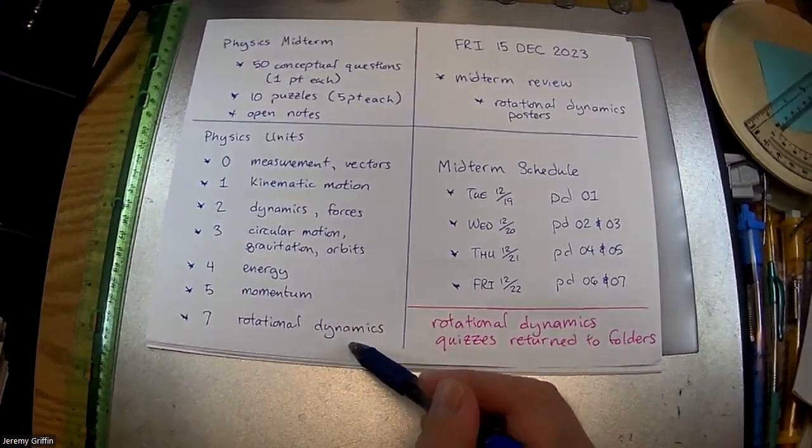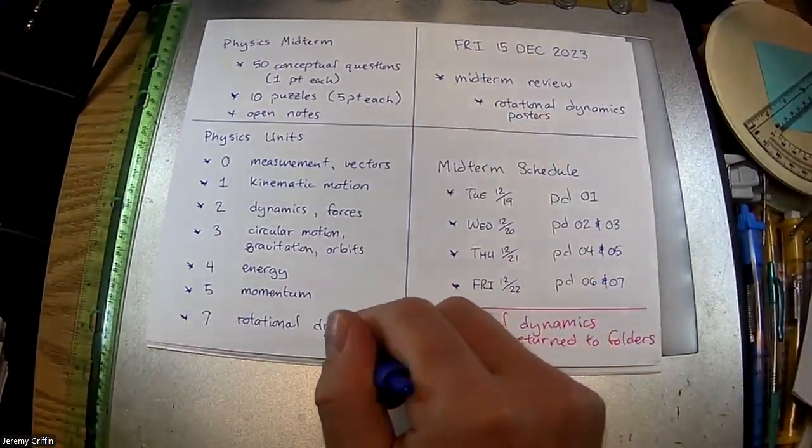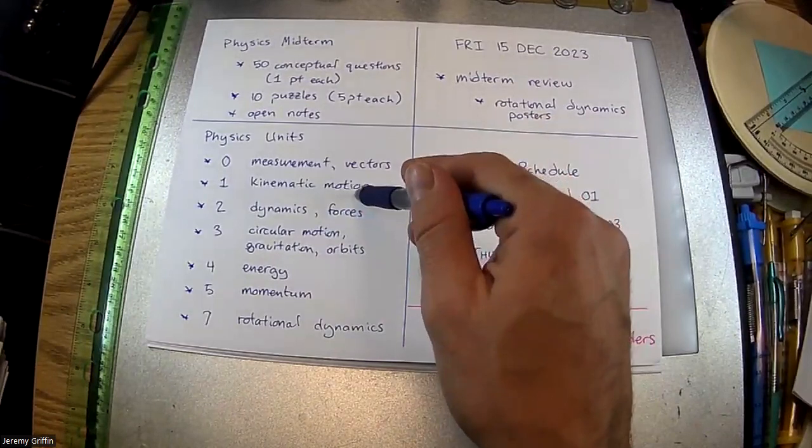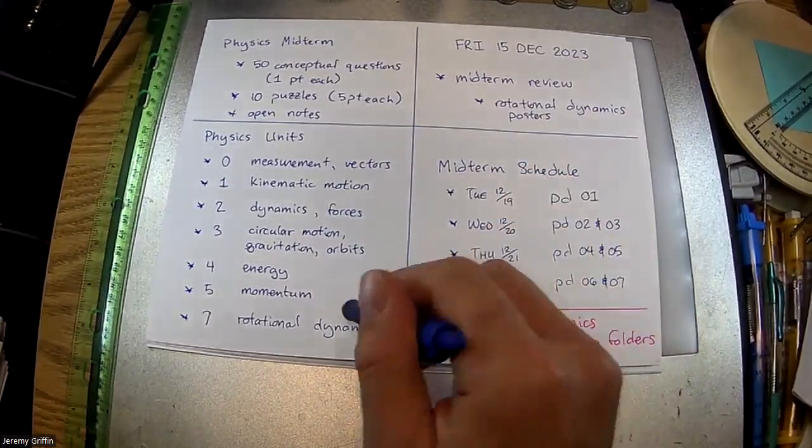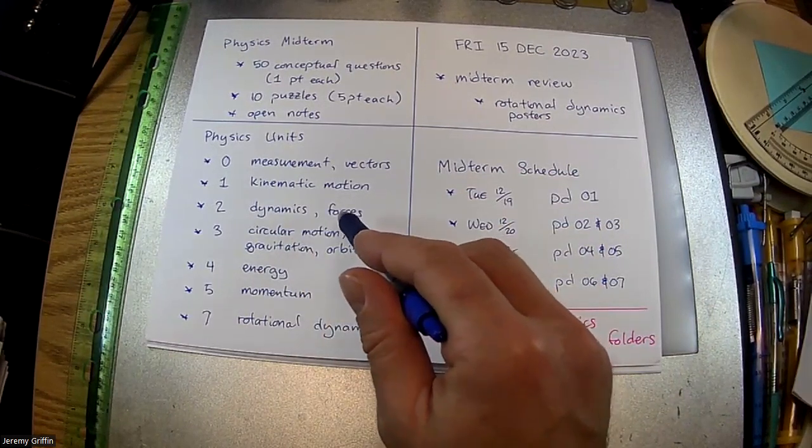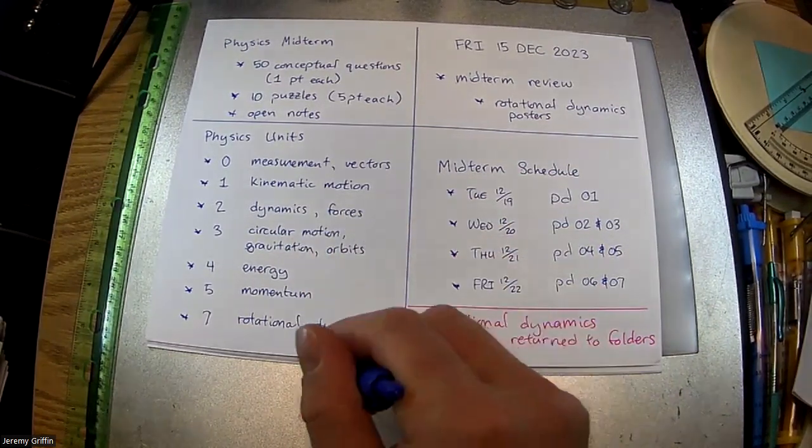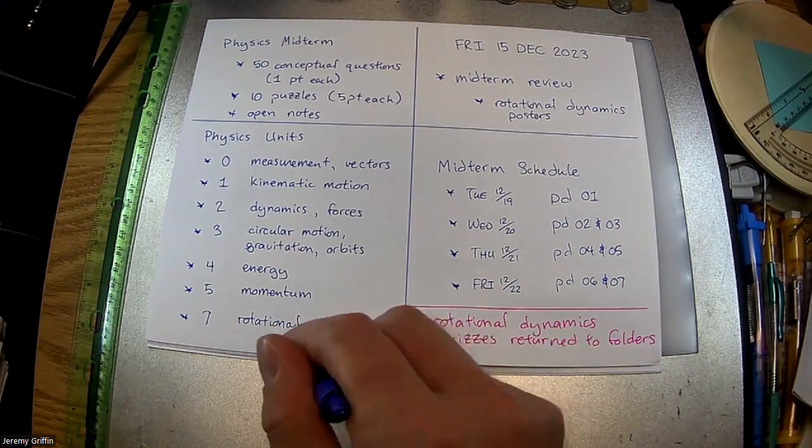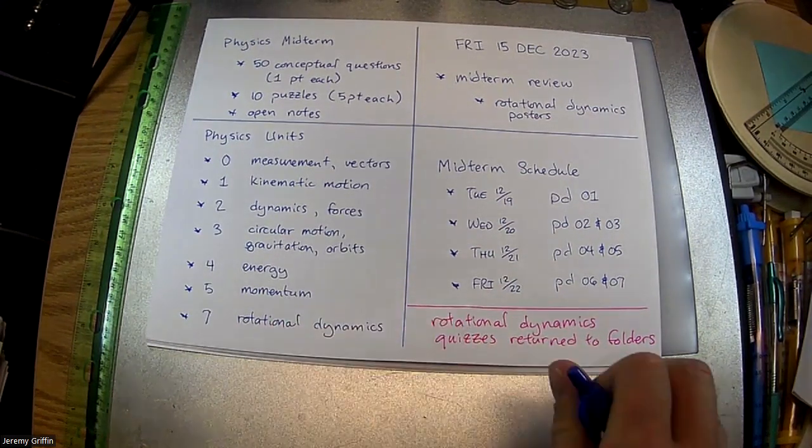Unit seven, rotational dynamics. So kind of all this stuff times two, right? Like kinematic motion had a rotational equivalent with rotational kinematics. Dynamics and forces, yeah, like Newton's second law of motion. Now we have instead of F equals MA, now it's torque equals I times alpha. So you have torque, you get angular momentum. All right, there you go. There's a big picture.